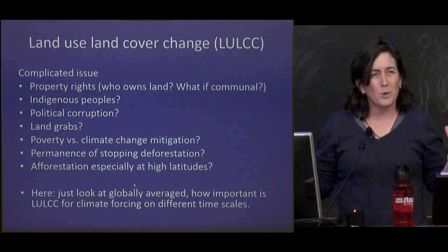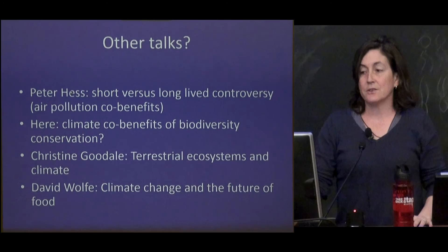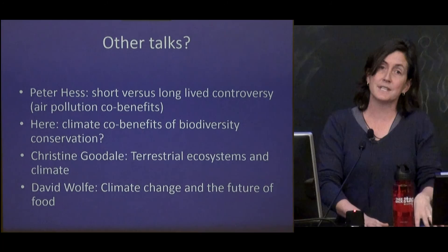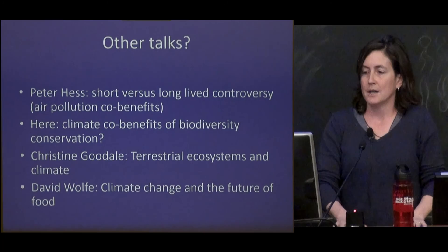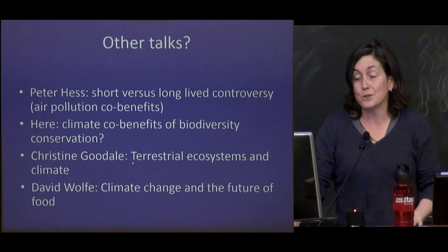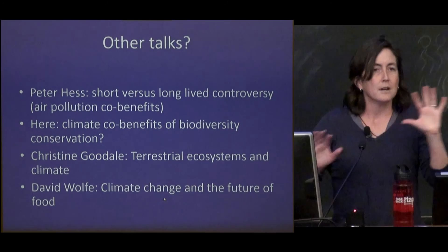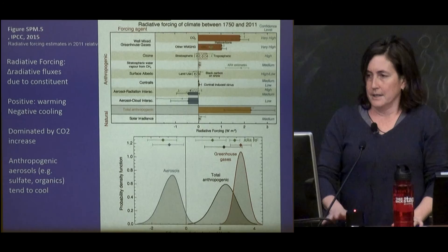Here I'm going to present some results about the globally averaged system — what's going on, and how important is land use and land cover change for climate forcing on a few different timescales. As was mentioned in the last talk, there are short- versus long-lived species and the air pollution co-benefits of climate. You want to clean up aerosols for air quality, but it's going to make the climate problem worse. We might think here about the climate co-benefits of biodiversity conservation. Professor Goodall will later talk more about terrestrial ecosystems and climate, and Dave Wolf will talk about climate change and the future of food.